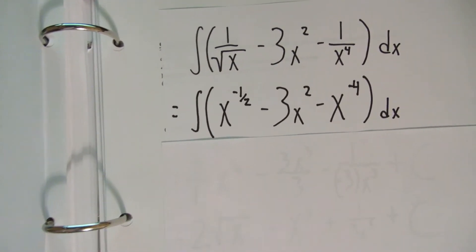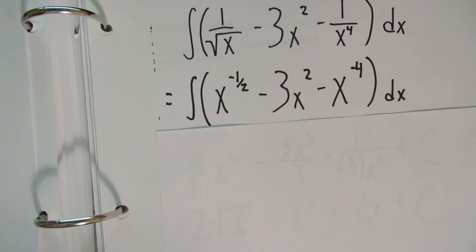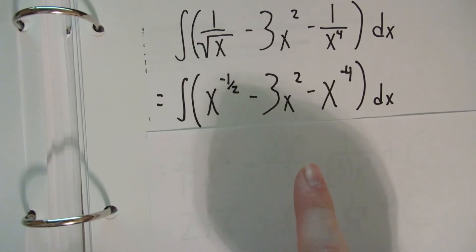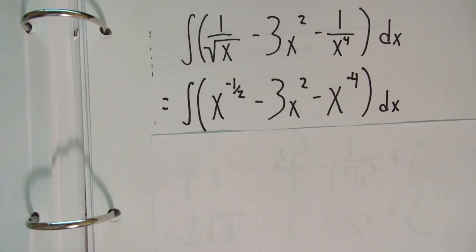Alright, so the next step would be to actually find the integral. You do this, as I just said, by raising the power by 1 and then dividing by what you've raised it to.